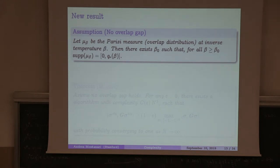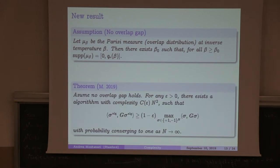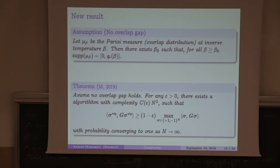And the result is the following: for any epsilon positive, there exists an algorithm with complexity quadratic in the size and depending on epsilon that achieves 1 minus epsilon approximation.